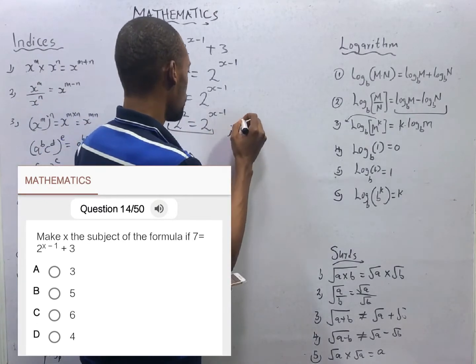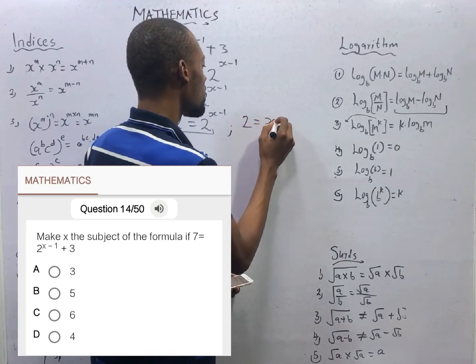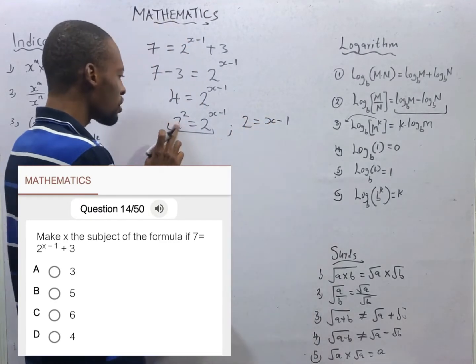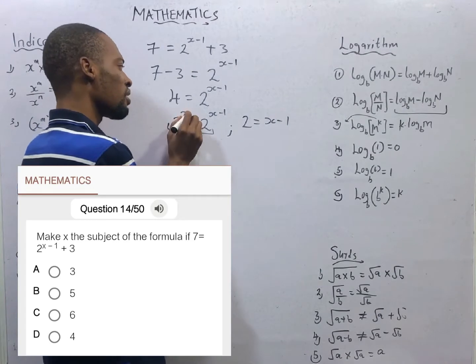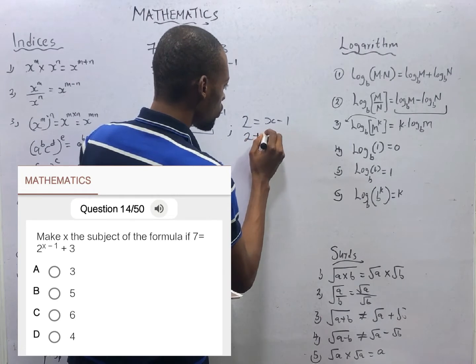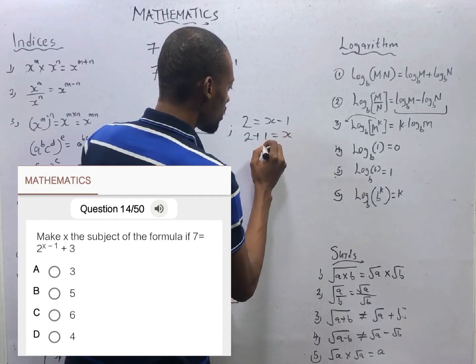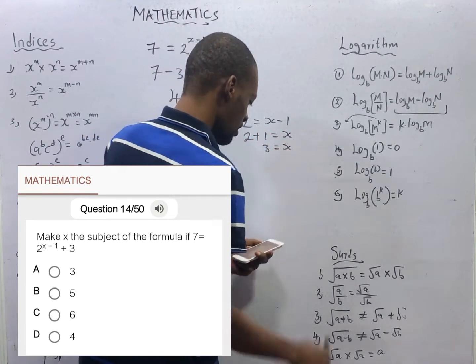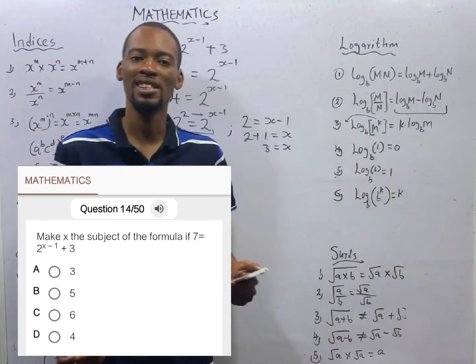So this is 2 is equal to 2 raised to the power of s minus 1. Since 2 is equal to 2, the 2 at the top is equal to s minus 1. From here, 2 plus 1 is equal to s, 3 is equal to s, and s is equal to 3. Option A is the correct option.